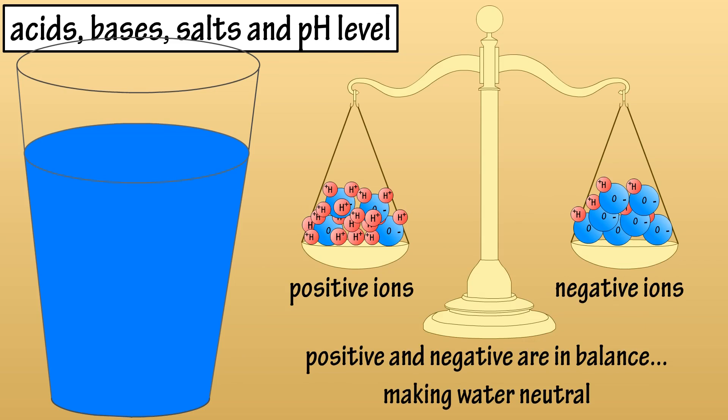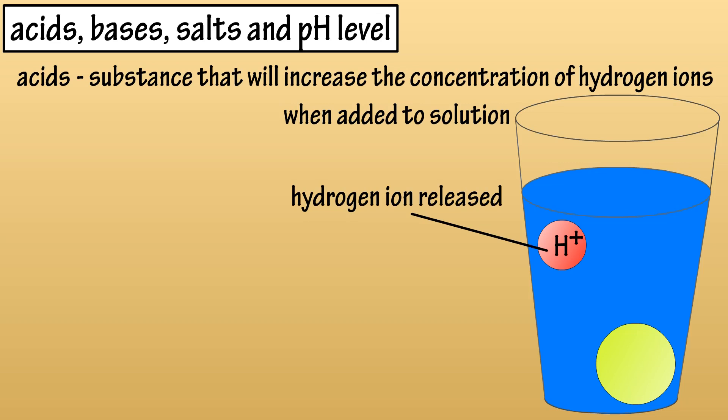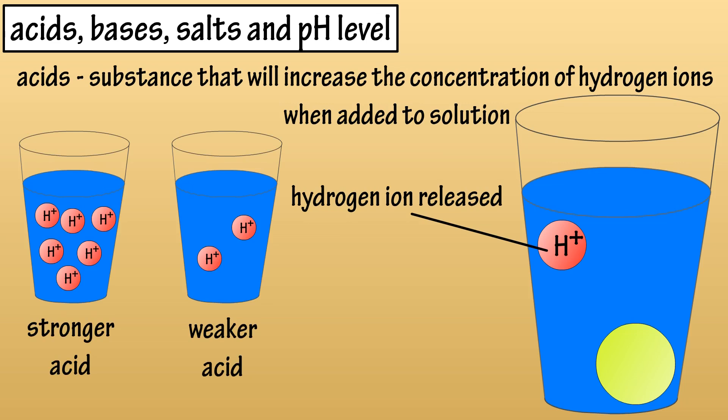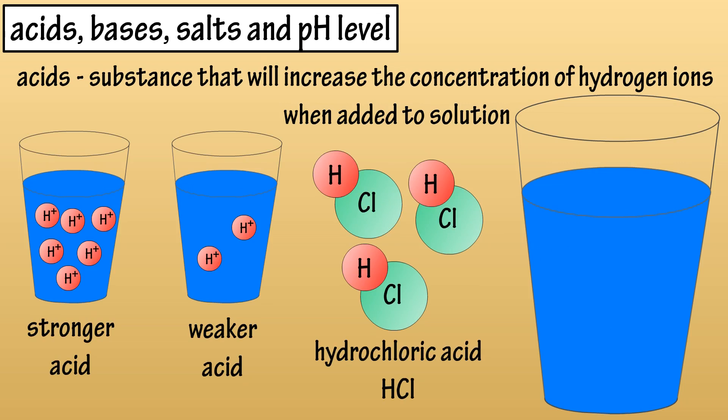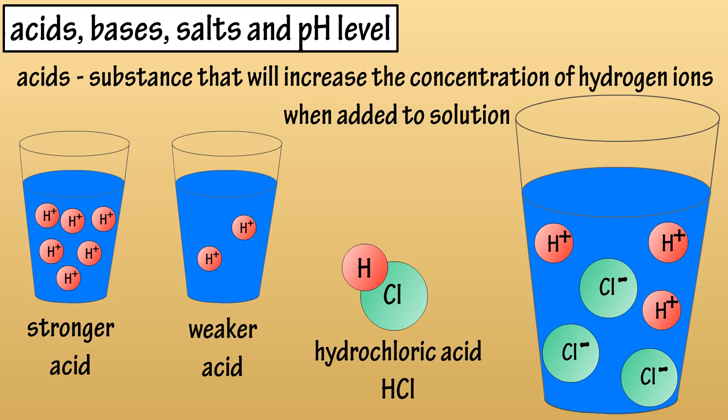Now for acids. An acid is any substance that when added to an aqueous solution or water will release a hydrogen ion or increase the concentration of hydrogen ions. So, how strong an acid is depends on the amount of hydrogen ions produced. For instance, hydrochloric acid or HCl, which is a hydrogen atom bonded to a chlorine atom when added to a solution or water will disassociate or break down into negative chlorine ions and positive hydrogen ions. Hydrochloric acid is a strong acid as it completely disassociates in water.